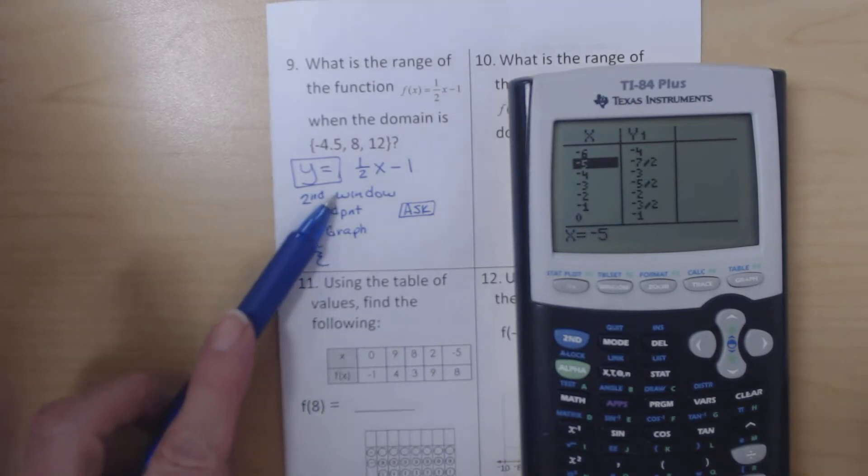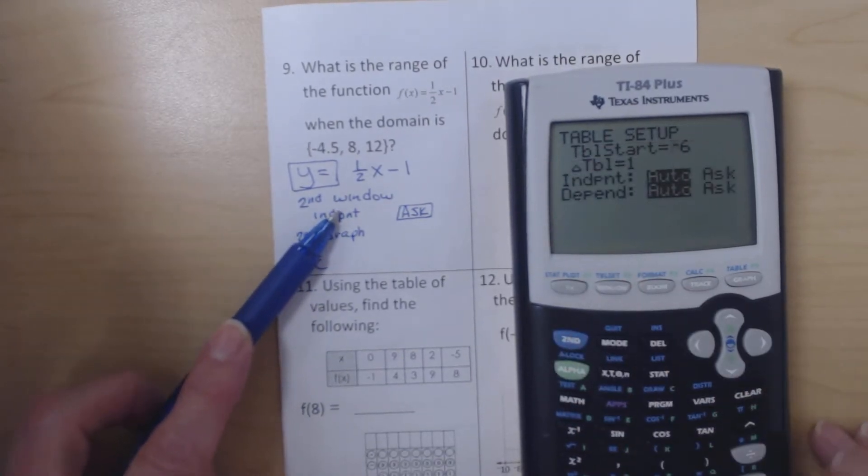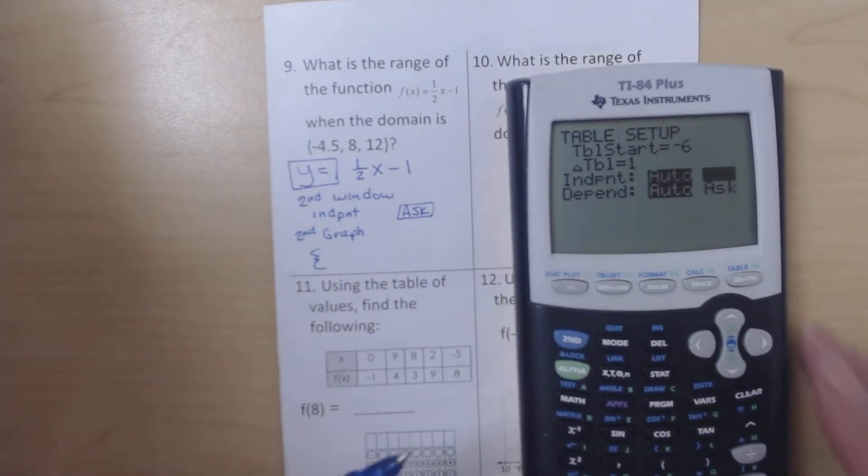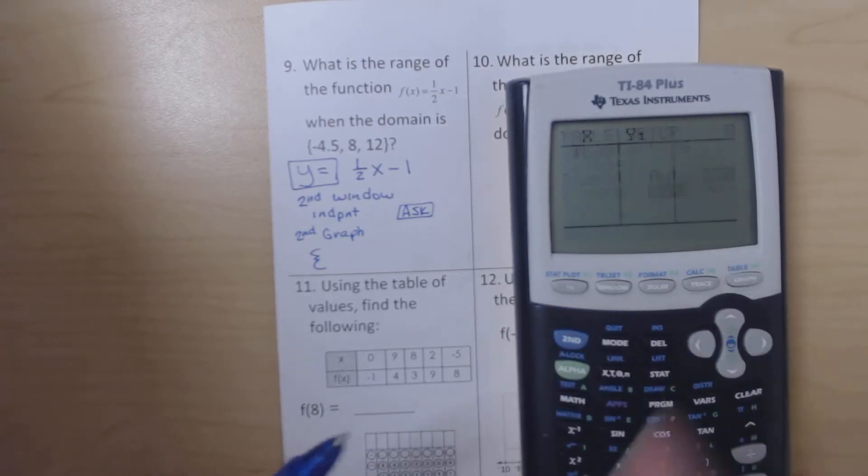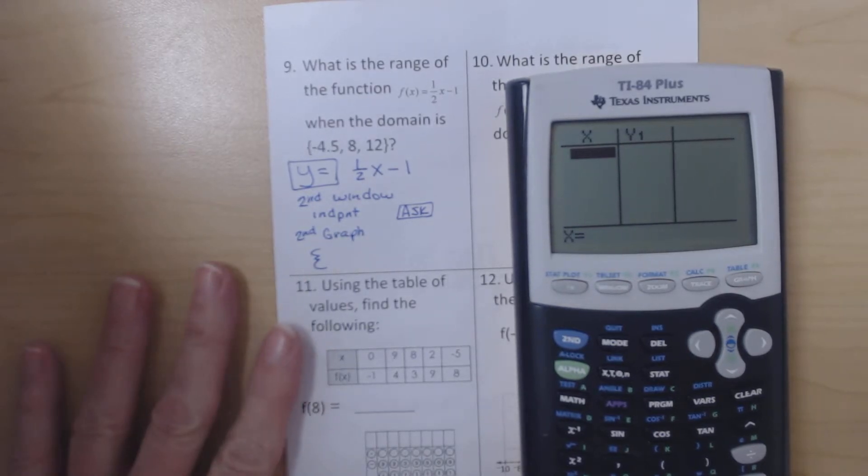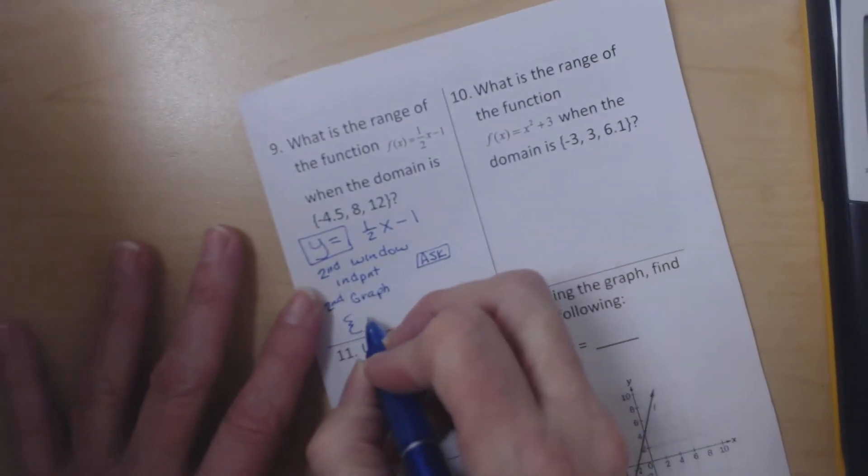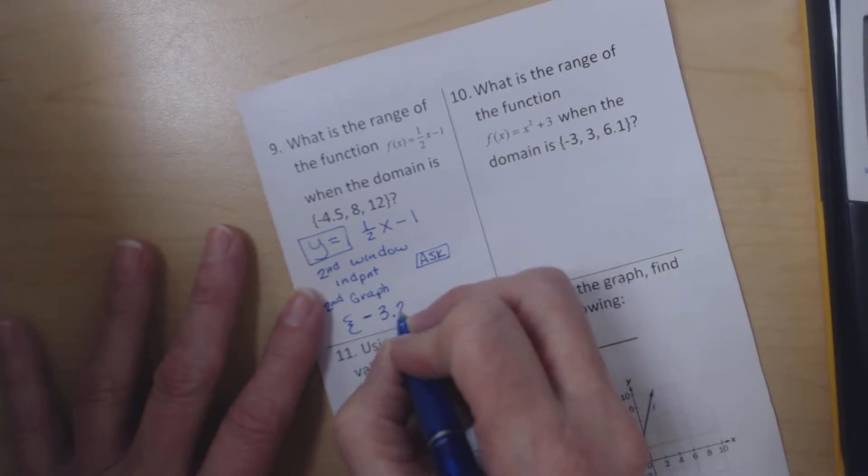So where I'm going to go is second window. So I do second window and I'm going to go down here to the independent which is your x and I'm going to say ask me what my x value is. So now I go back to the table and all of that stuff is gone because I haven't asked it anything yet. I want to ask -4.5. If x is -4.5, what is (1/2)x minus 1? And it tells me -3.25.